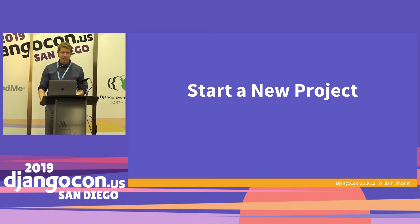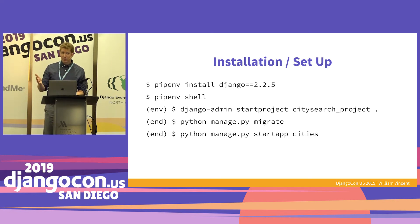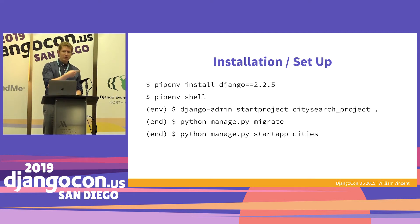I'm going to walk through how to start a new project from scratch. We install Django with pipenv, run pipenv shell to start your virtual environment, then start the project — we're calling it city_search_project. I add a period at the end, which is optional but prevents Django from creating a redundant extra directory and makes deployments a little easier. Migrate the database to initialize it, then start an app called cities.